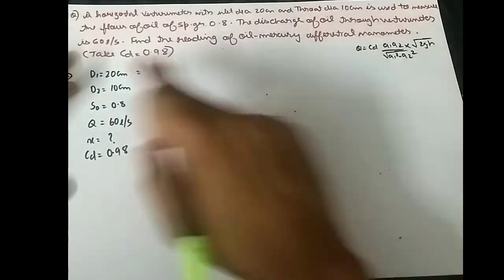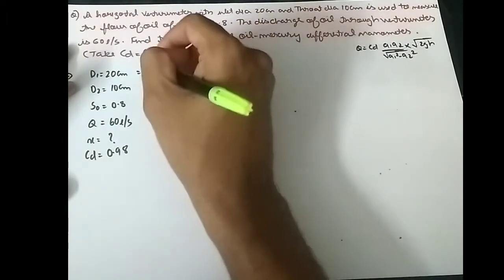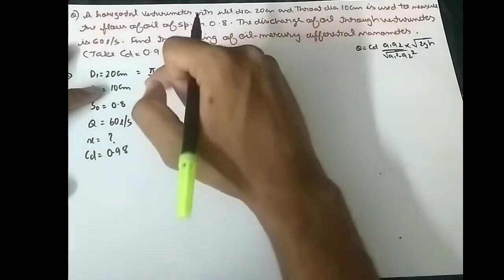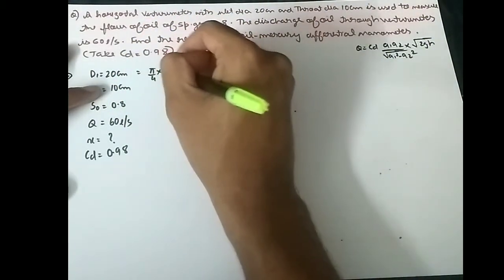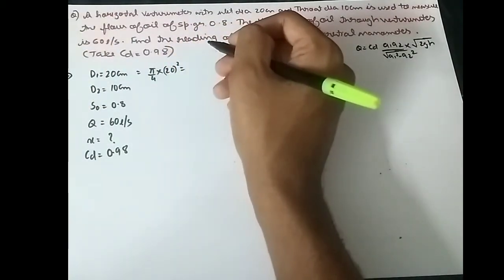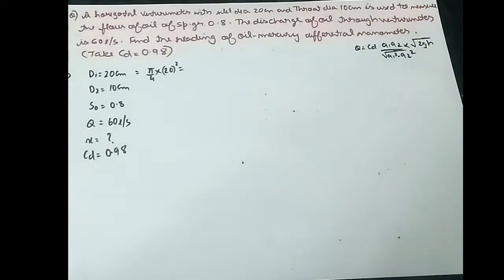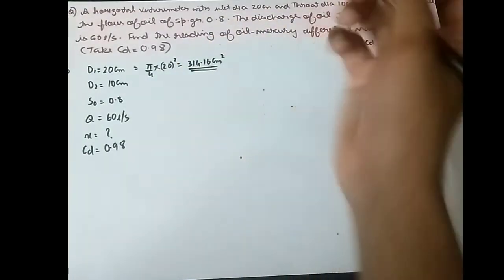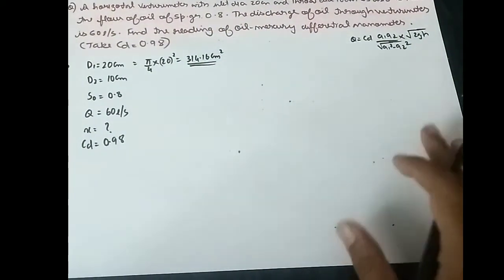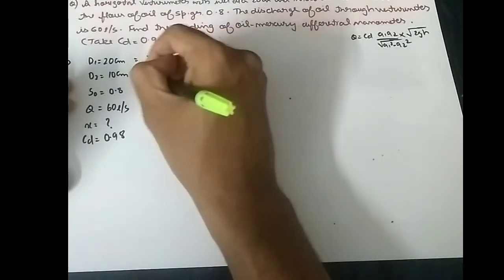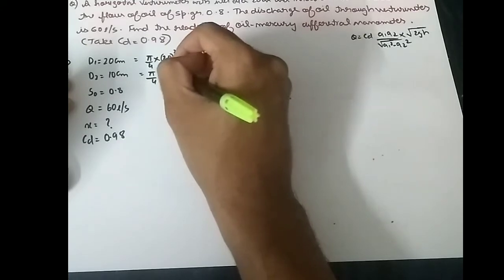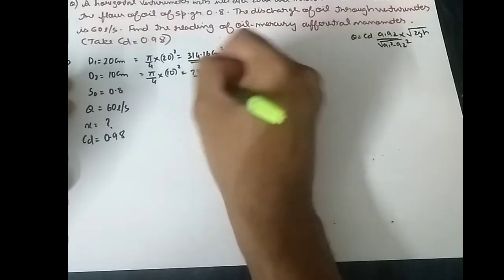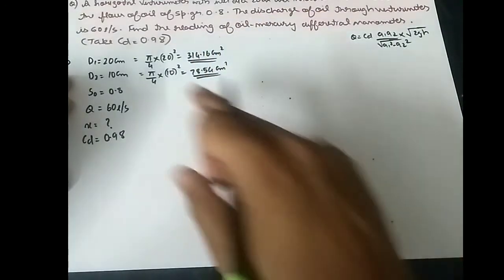Since we have the diameters, we can find the areas. A1 is pi/4 into D1 squared, which is pi/4 into 20 squared, giving 314.16 centimeter square. A2 is pi/4 into 10 squared, which gives 78.54 centimeter square. Remember these are in centimeters; 0.2 meter if converting.